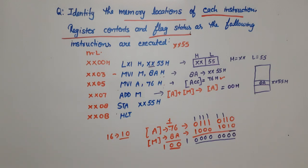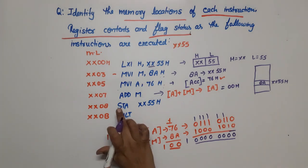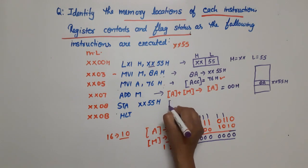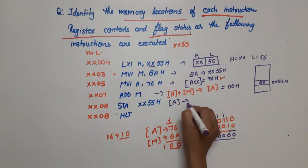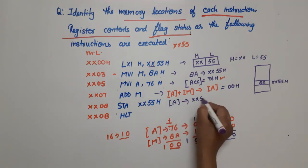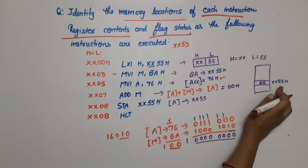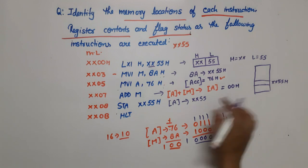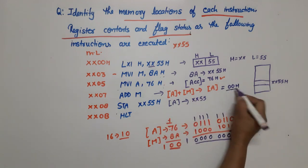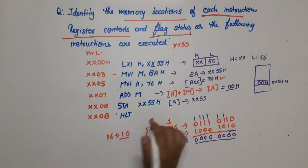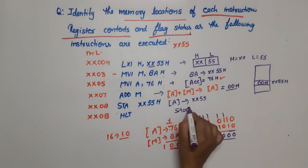STA means store the content of the accumulator at the specified address. So the content of the accumulator is stored at XX55H — the previous data 8AH is replaced and the new value 00H is stored there. HLT means stop the program. These are all the memory locations and register contents after execution of every instruction.